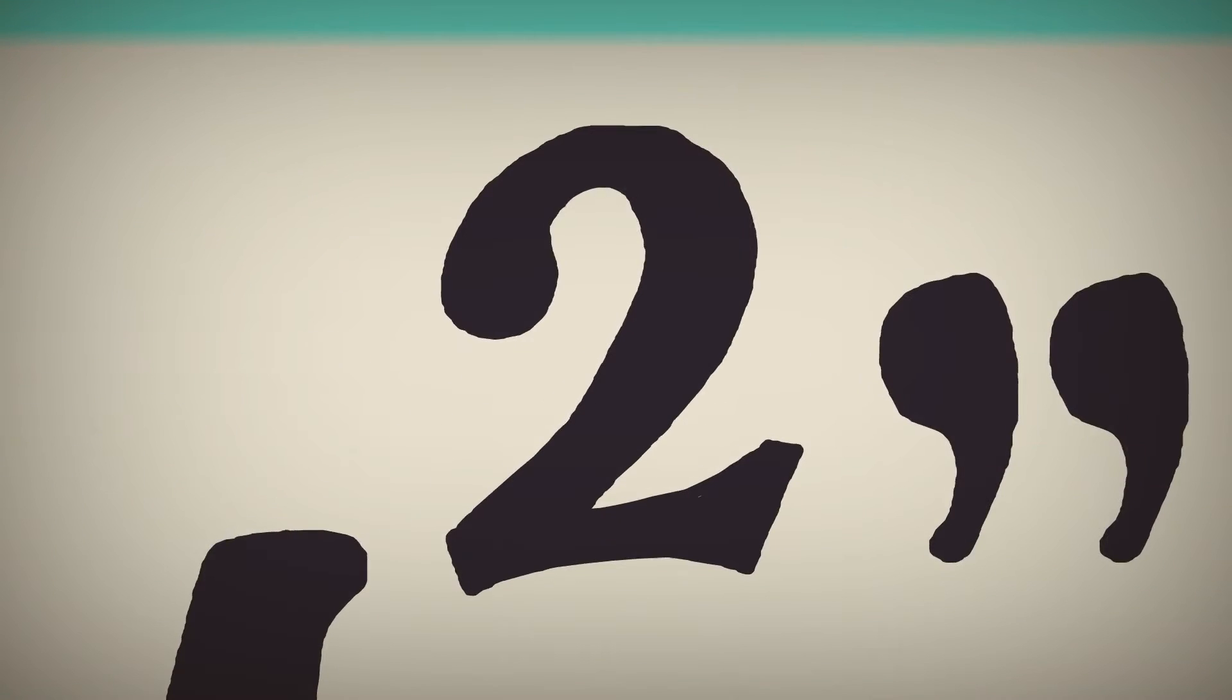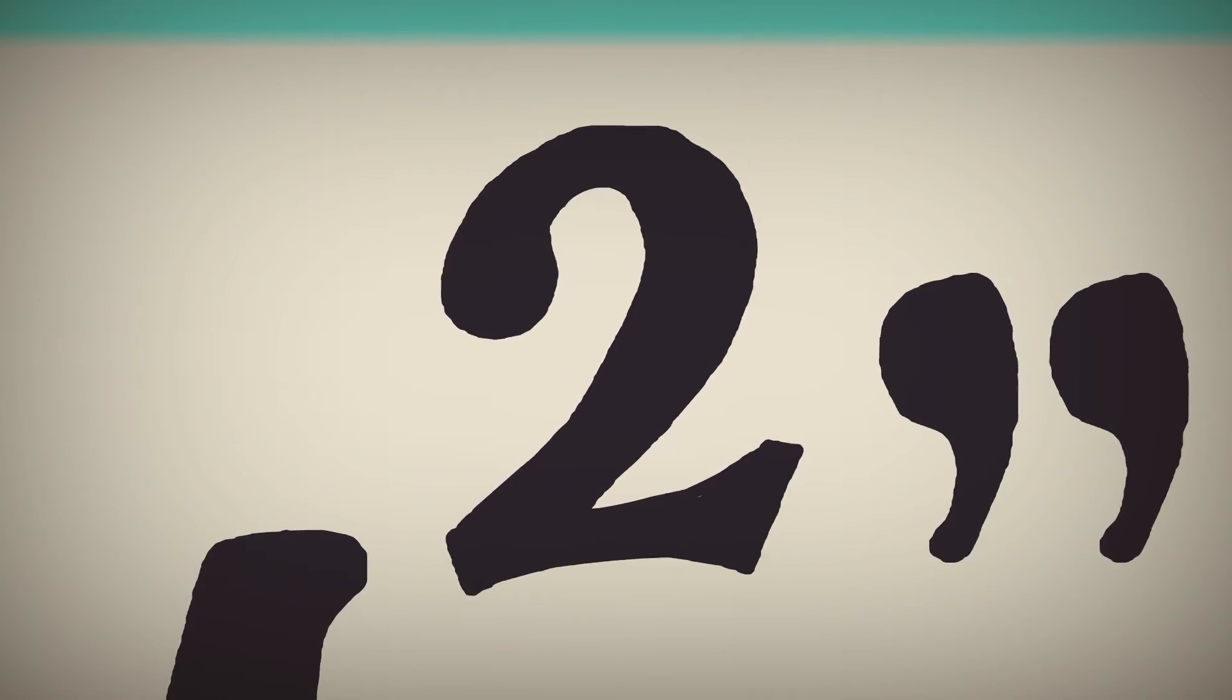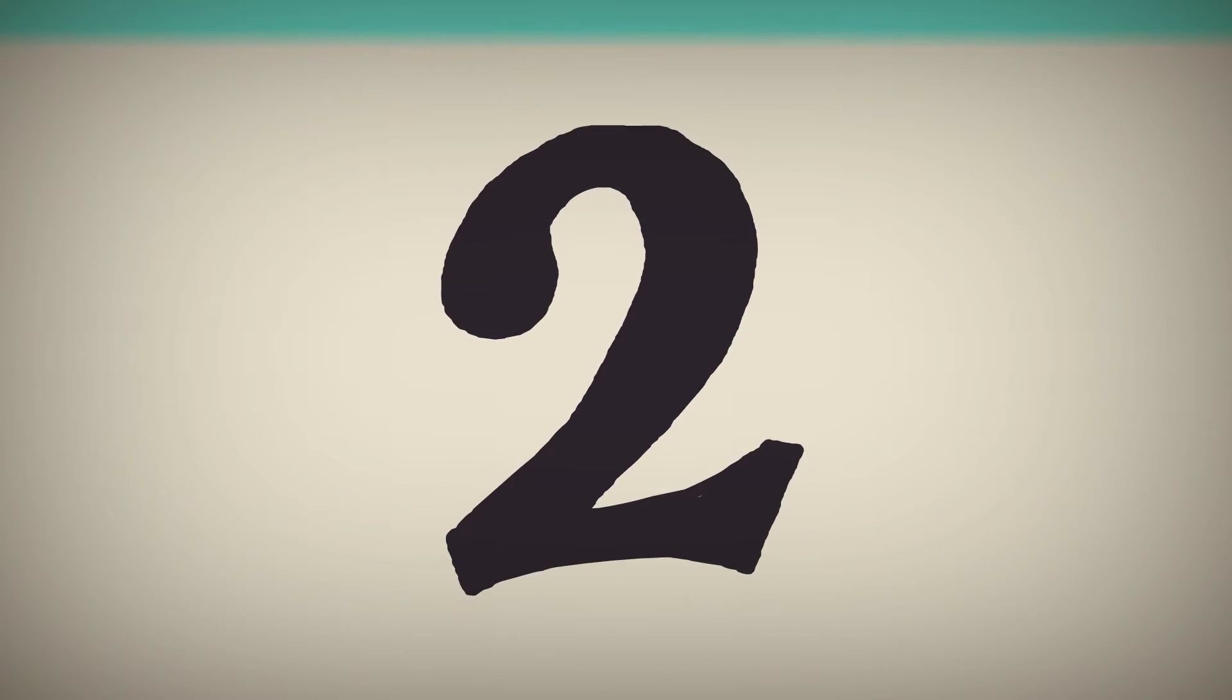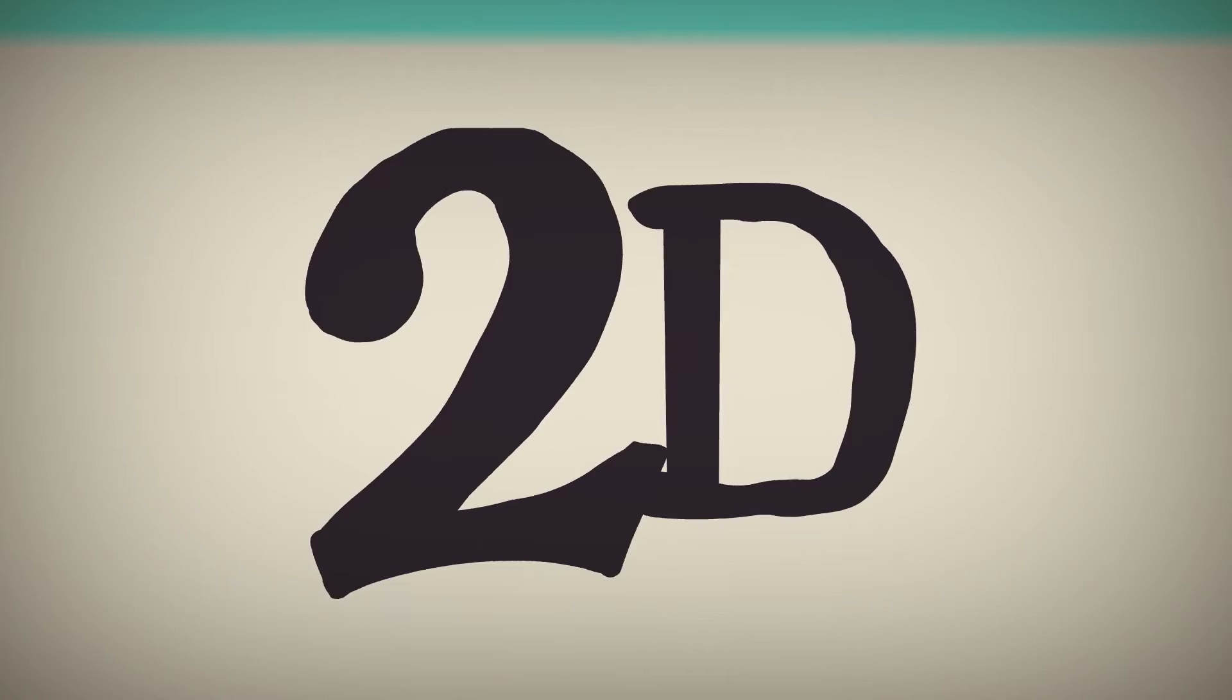When writing this out, we use one of these little guys, a superscripted two or exponent, which we call a square. It's rather fitting, isn't it? When you see this two, you know you are dealing with the second dimension.